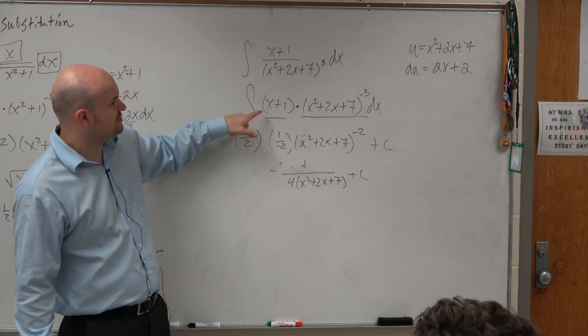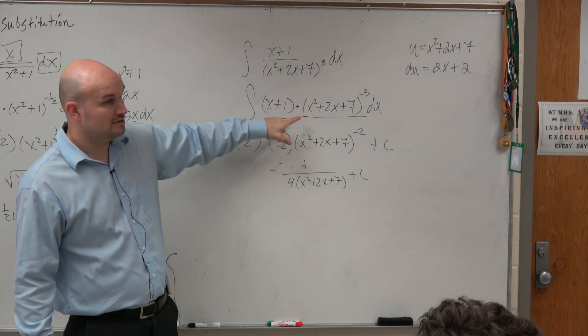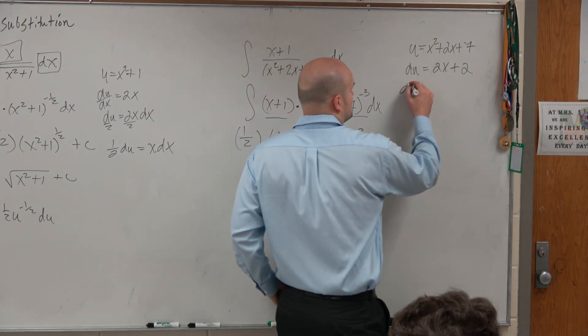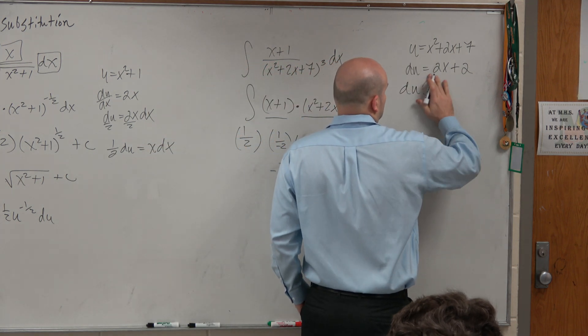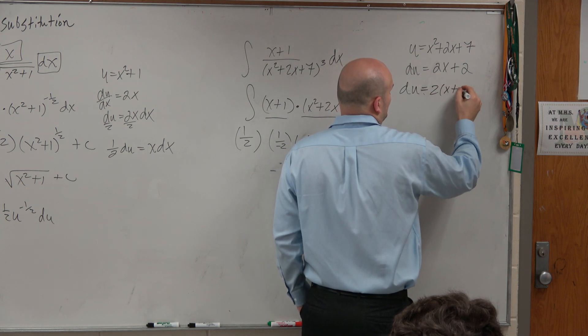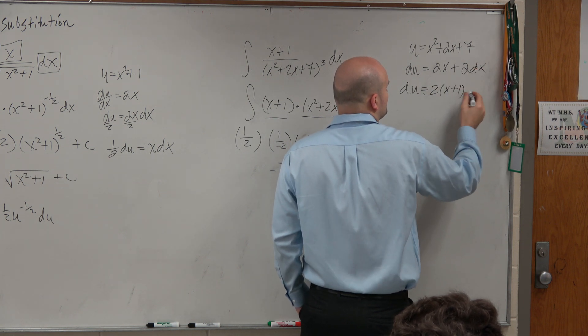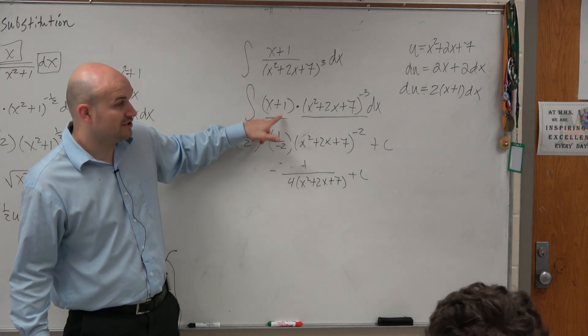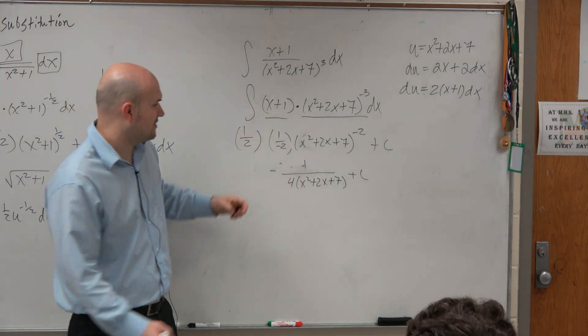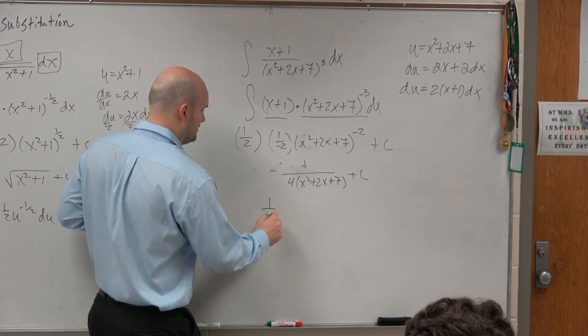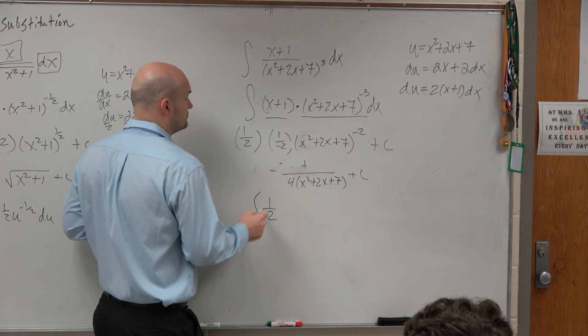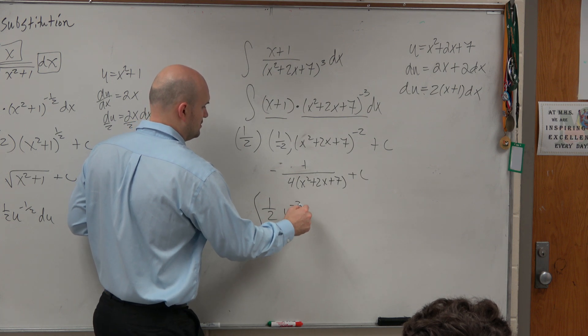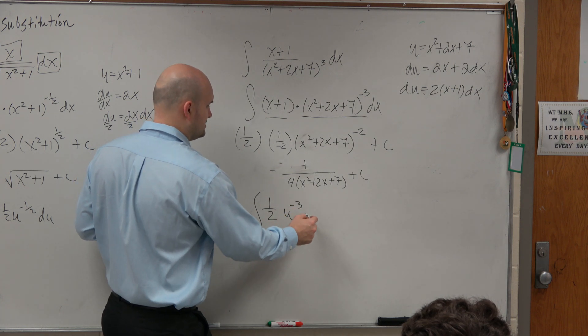Now, if I look at this, do I have a 2x plus 2? No, right? I don't, du, I can't represent this. However, could I do this? Could I say du equals 2 times x plus 1? Oops, I'm sorry. That's dx. 2 times x plus 1 dx? Now do I have an x plus 1? Yes, the only thing I don't have is my 2. So I need to counteract that by having a 1 half. And then I'm integrating u to the negative third power and du.